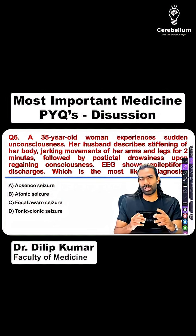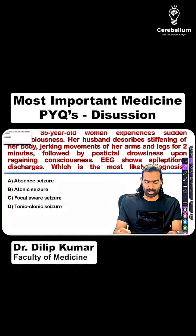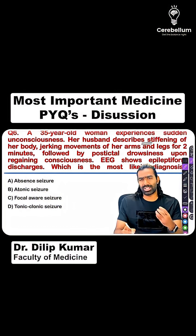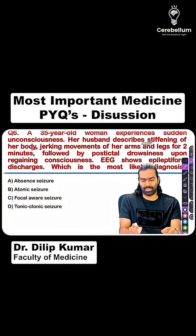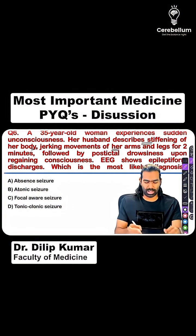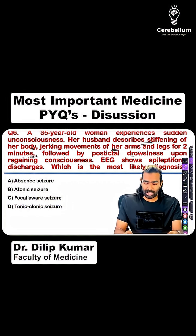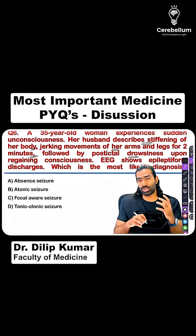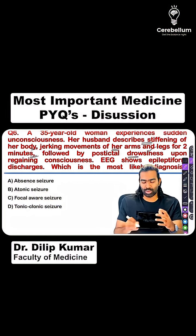This is a classic case of a generalized tonic-clonic seizure. Initially, the patient had a stiffening of her entire body — that's the tonic phase. Then, there was a rhythmic jerking of her arms and legs for two minutes, which is basically the clonic phase. And then, the patient has post-ictal confusion and drowsiness as well.